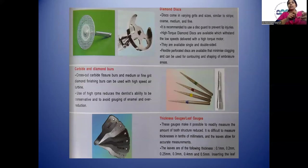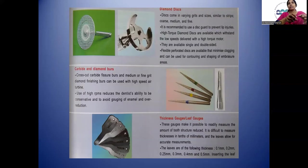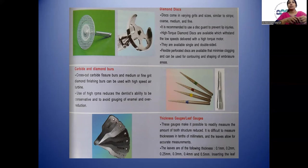Diamond discs come in different sizes and grits — fine, medium, and coarse. It is recommended to use a guard to prevent lip injuries. High-torque diamond discs are available to withstand low speeds delivered with a high-torque motor, available as single and double-sided. Flexible perforated discs minimize clogging and can be used for contouring and shaping of embrasure areas. Cross-cut carbide burrs and medium-fine grit diamond burrs can be used with high speed or turbine. High RPMs reduce the ability to control and should be avoided to prevent gouging of enamel and over-reduction.